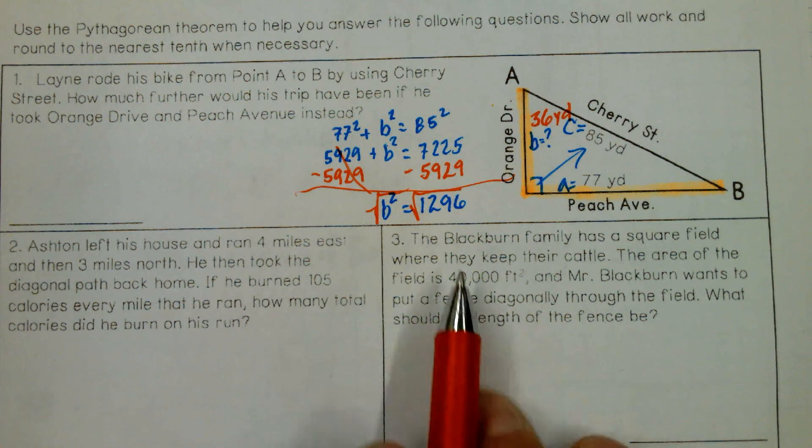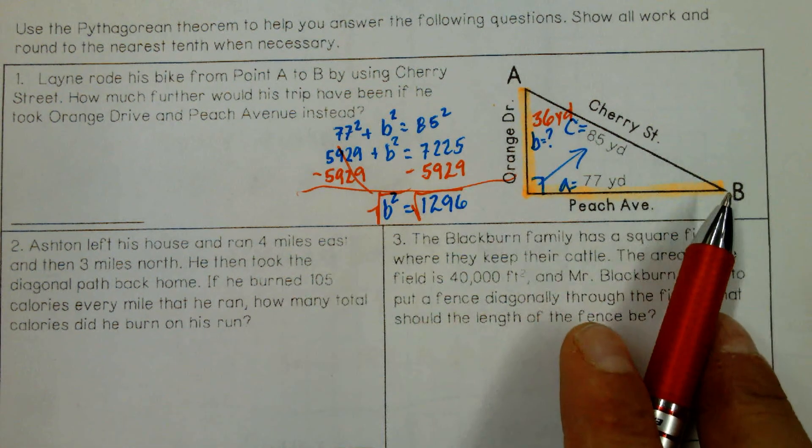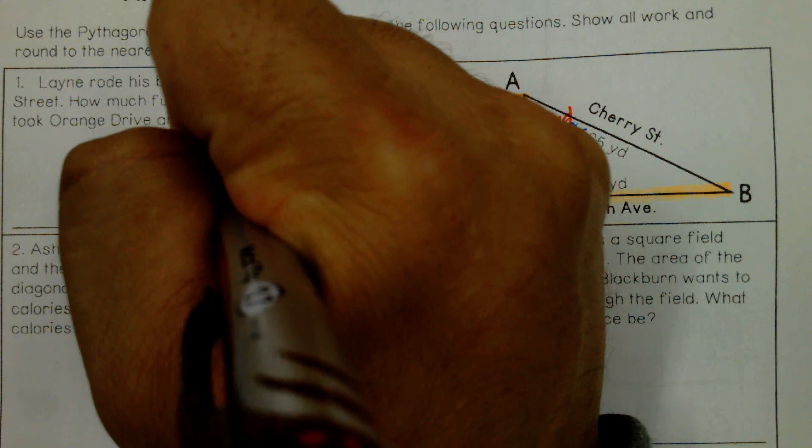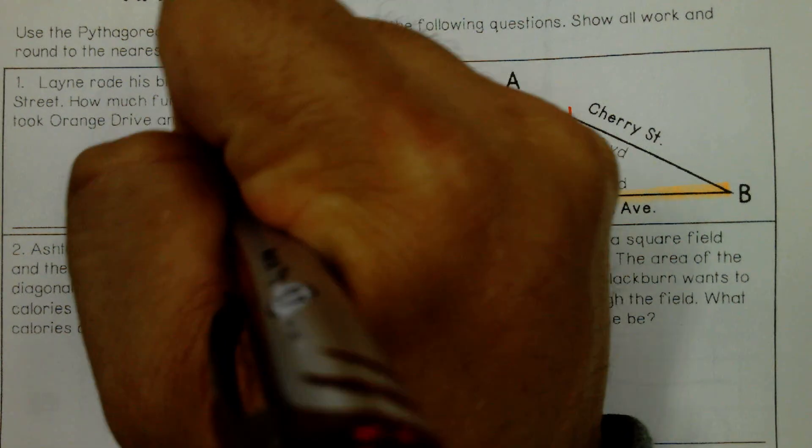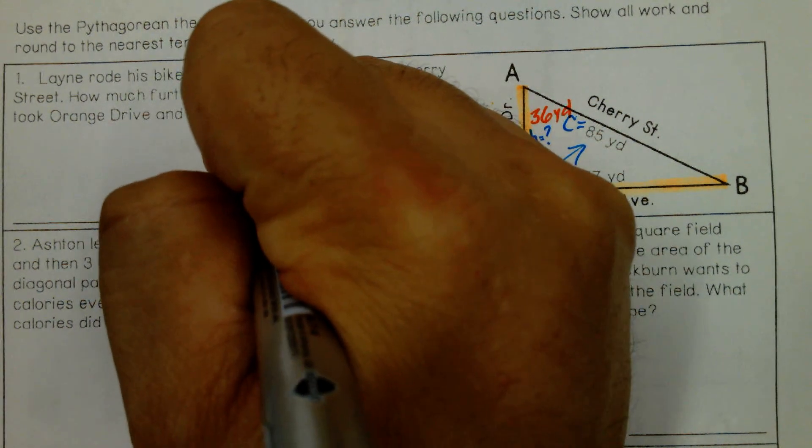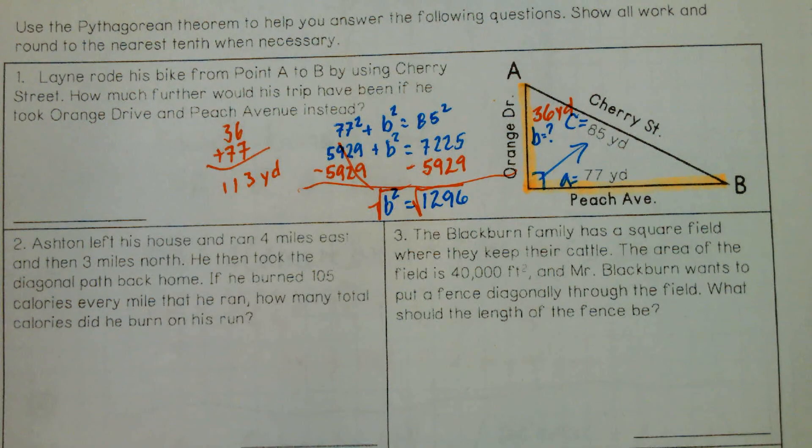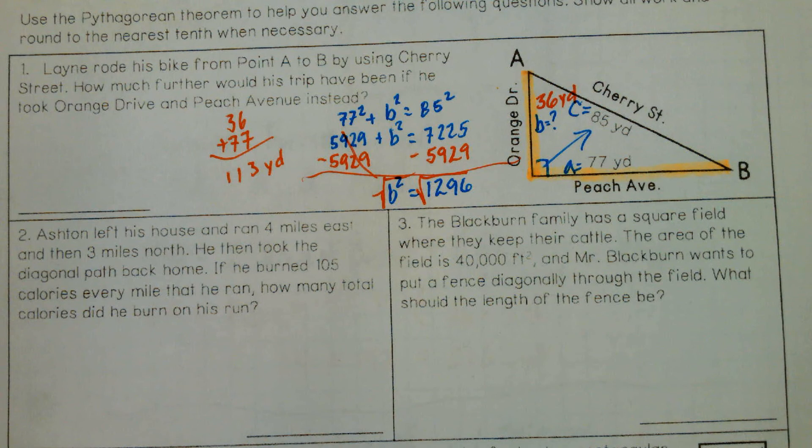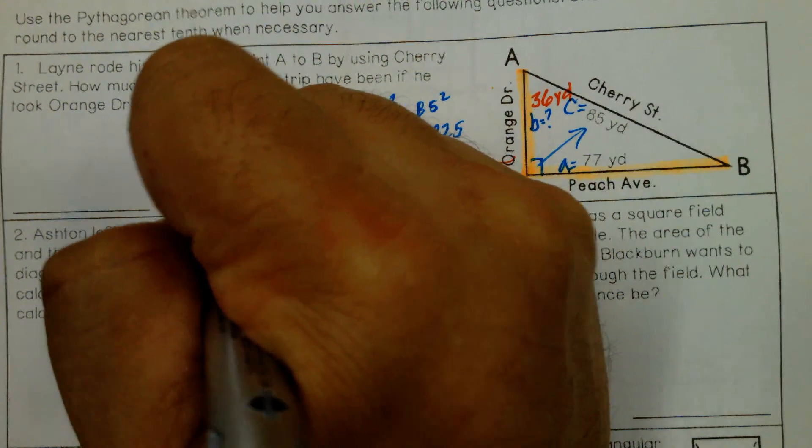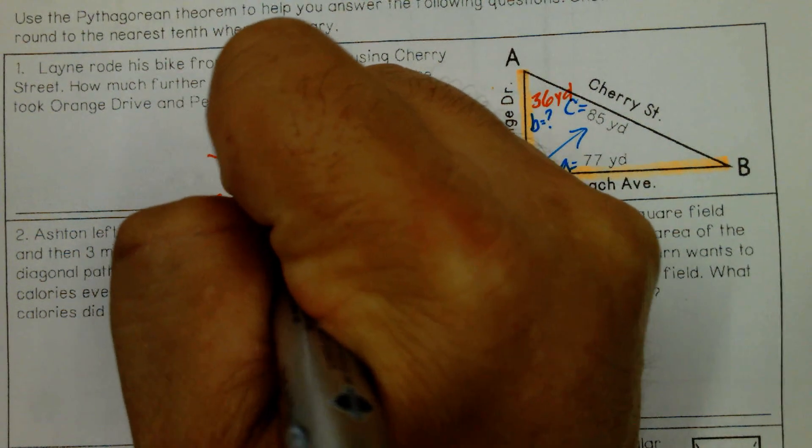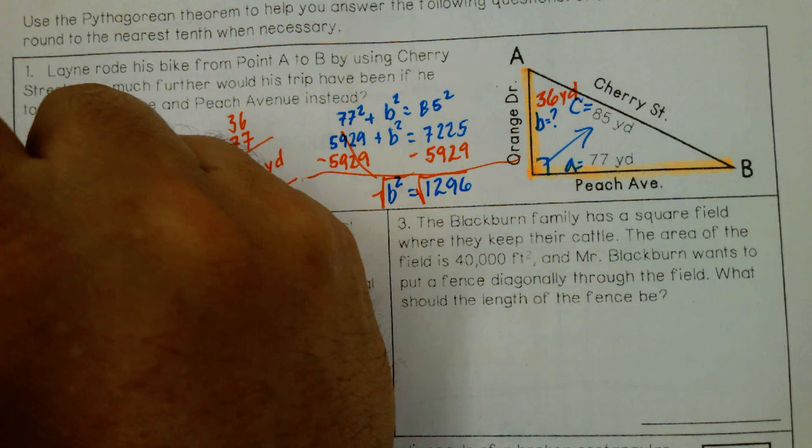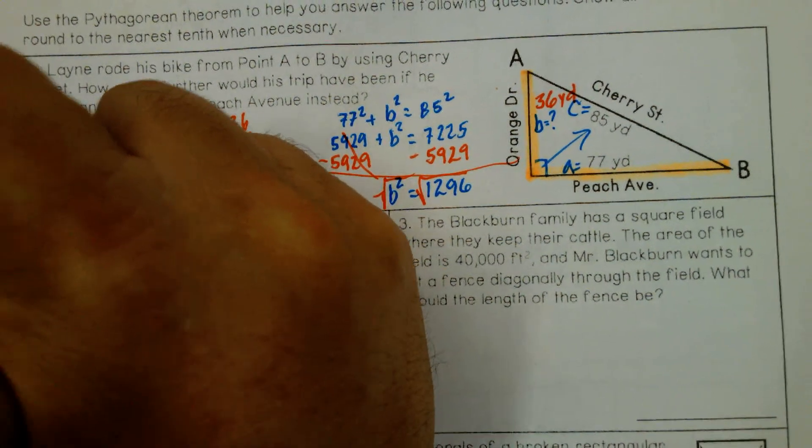So now we know we're going to compare 85 yards to 36 yards plus 77 yards. And that's 113. So how do we compare them? How do we know how much longer it's going to be taking this route? Yeah, minus 85. And that gives us 28. So it's 28 yards farther.